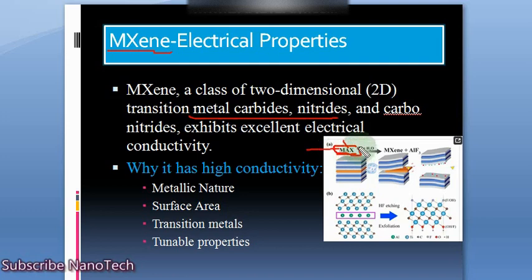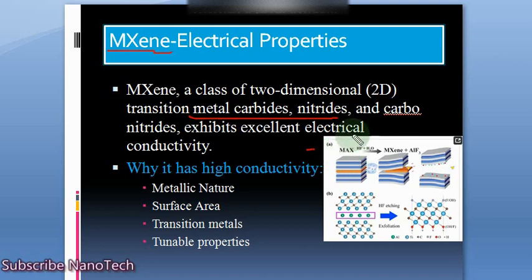From this parent MAX phase, we have to extract MXene. What we do is basically etch the A layer from the MAX phase. This etching is done through harsh etching using acids — for instance, HF (hydrofluoric acid) is commonly used. There are many other etchants, including nitric acid or hydrochloric acid with lithium fluoride, which have been discussed in previous videos.